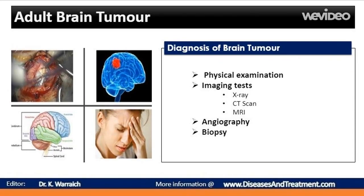Diagnosis of a brain tumor begins with a physical exam and a look at your medical history. The physical exam includes a very detailed neurological examination. Your doctor will conduct a test to see if your cranial nerves are intact — these are the nerves that originate in your brain. Your doctor will look inside your eyes with an ophthalmoscope, which is an instrument that shines a light through your pupils and onto your retinas, to check how your pupils react to light and to see if there's any swelling of the optic nerve. When pressure increases inside the skull, changes in the optic nerve can occur.